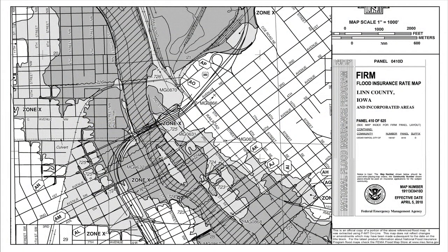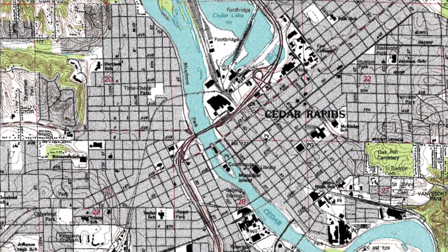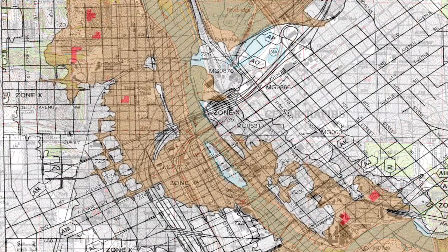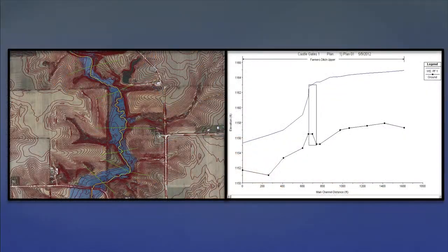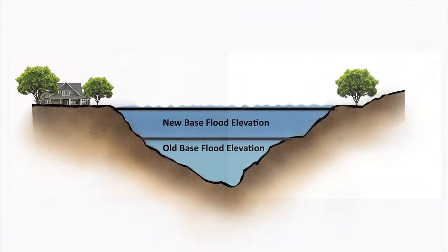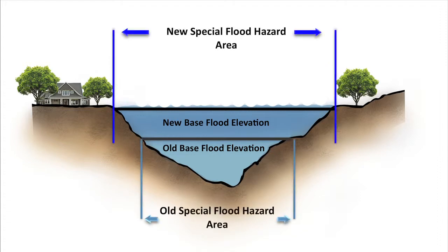When a FIRM is developed, FEMA uses the most accurate flood hazard information available at that time. Even so, limitations in the scale or topographic definition of a source map can cause small areas of higher elevation to be mistakenly included in the Special Flood Hazard Area. Additionally, more detailed hydraulic or hydrologic data may become available after the creation of a FIRM. This information may change the calculation of the base flood elevation, which could then change the boundary of the Special Flood Hazard Area.